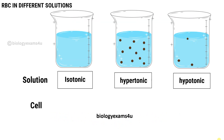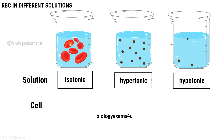We are going to place red blood cells in different solutions. The first solution is the isotonic solution. Iso means same. Here the solute concentration of the cell is the same as that of the external solution, so the inflow and outflow of water remains the same — there won't be net movement of water. When RBCs are placed in this solution, the cell remains normal without any change in shape.